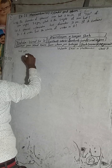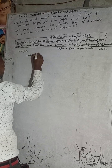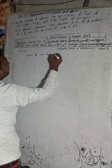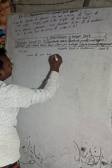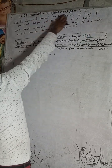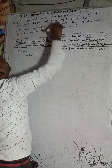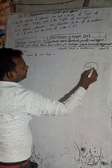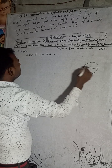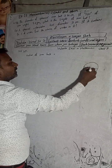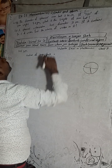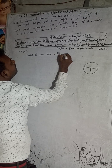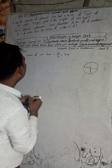The radius of the iron ball: the diameter is 14 cm, so the radius will be half. For any sphere, if the diameter is given, the radius is just half of it. So diameter is 14, therefore 14 divided by 2 equals 7 cm — that is the radius of the iron ball.